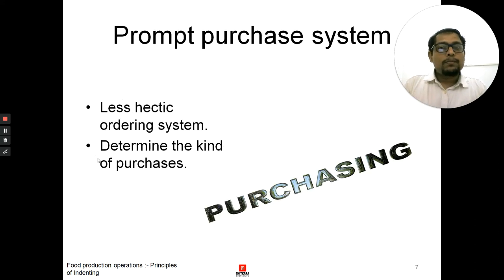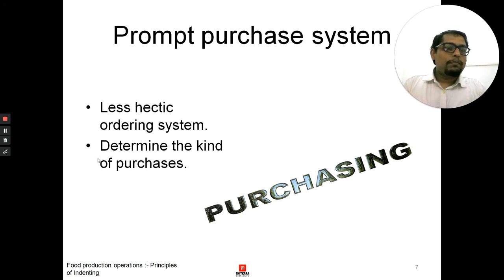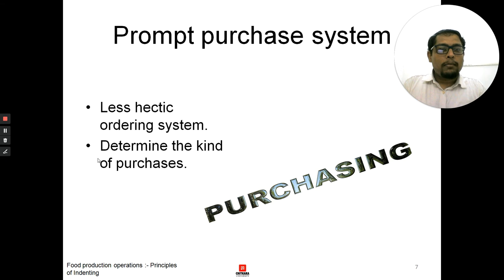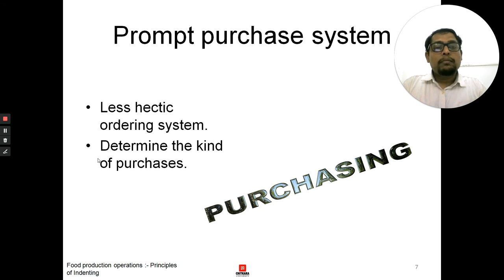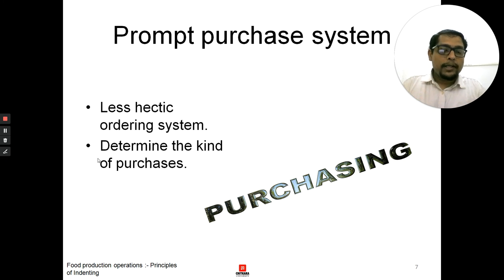The next is the prompt purchasing system. It would be less hectic for ordering — the chef or the person in charge would be indenting easily, as they know what amount, what quantities, and what quality is required for purchasing the particular food product. The food purchasing will be determined accordingly.